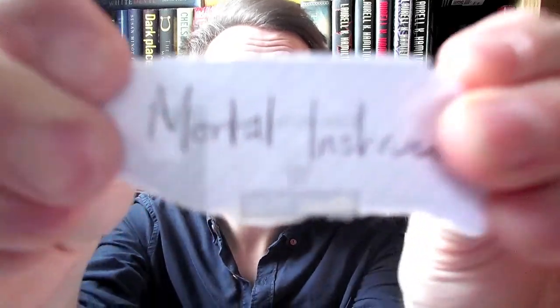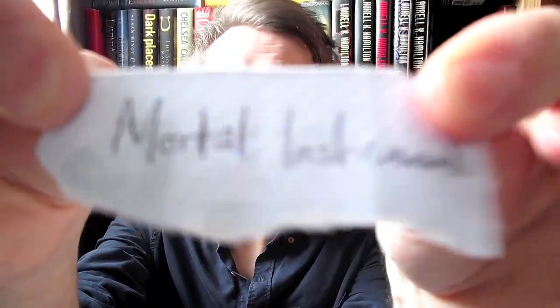Next we are looking for the brains of the team. The brains of my team is Molly. I don't see that being true. Molly has no brains. At least she's big. So the next book is going to be the Mortal Instruments series.